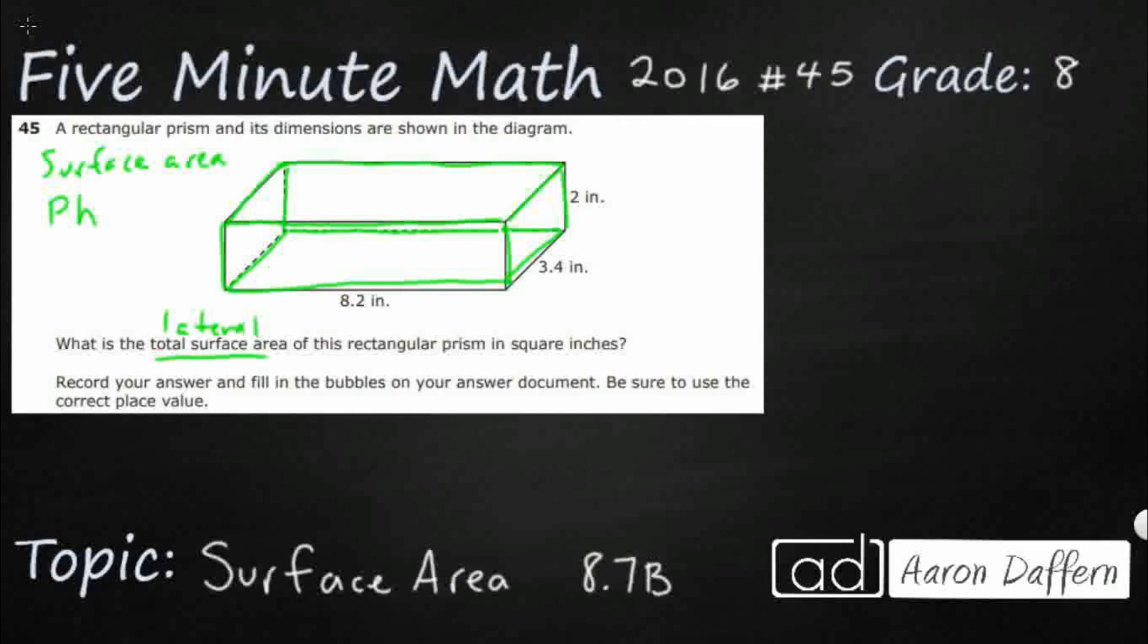If you want the total surface area, you need the lateral surface area, because that's going to pick up your four rectangular faces there, and then you just need to add 2B. We need to grab this base right here and then just double it, because it's on both sides.